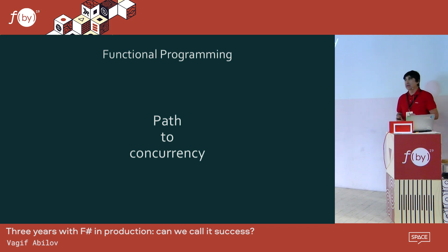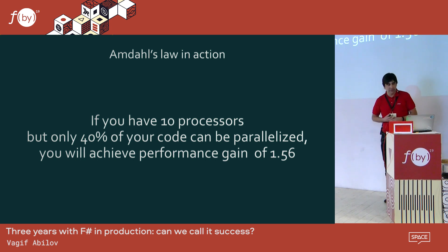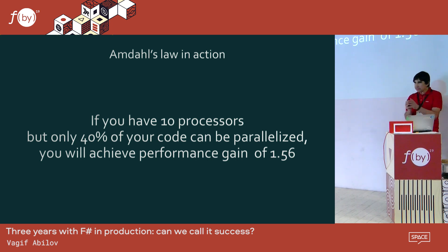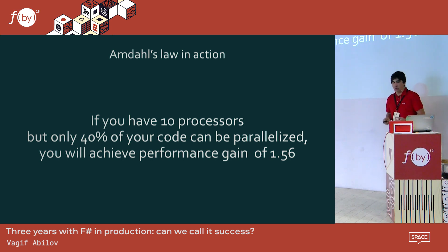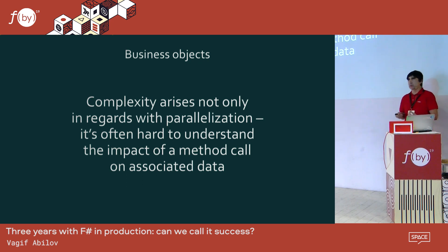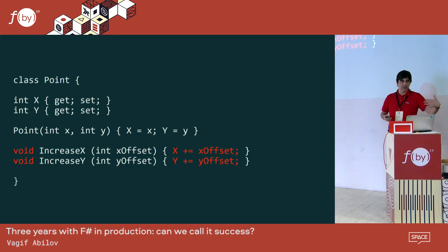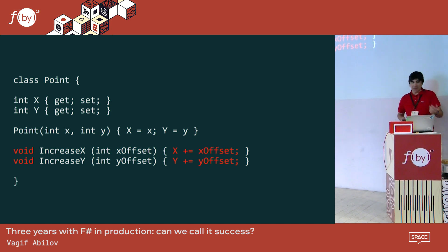We shouldn't underestimate the effect of Amdahl's law, which calculates how much you waste if you have pieces of code that can't be parallelized. If 60% of your code is not available for parallelization, then you can throw 10 cores, 10 CPUs at it, and you only gain 56% of performance. That's a real eye-opener. Also, business objects that mix type definitions with methods can become very obscure — you can lose track of what's going on, especially with mutable data.